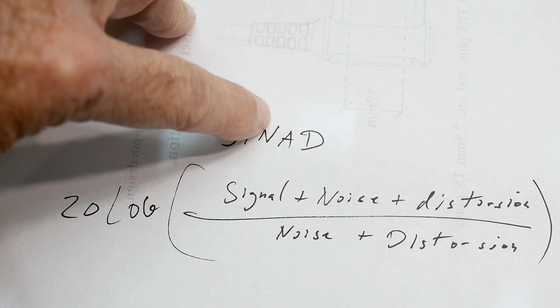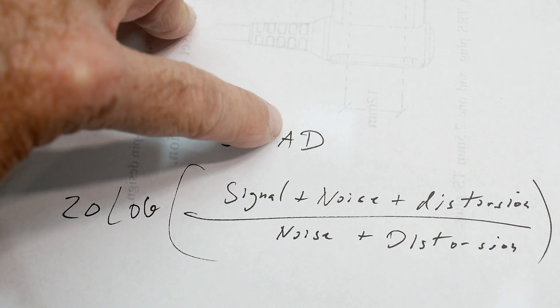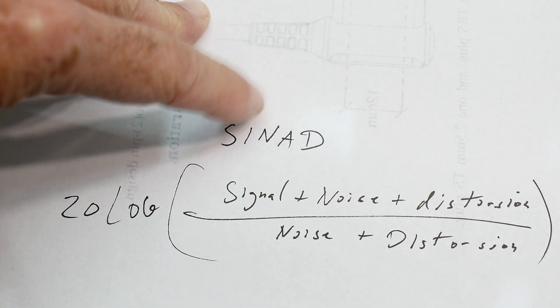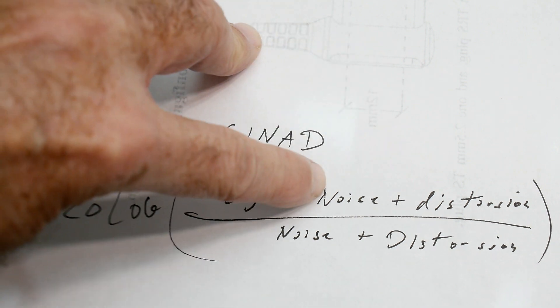It stands for Signal-to-Noise and Distortion. So it's signal plus noise plus distortion.